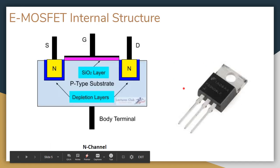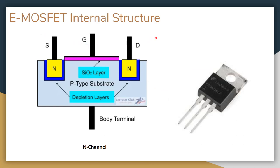Now let's look at how an E-MOSFET works and its internal structure. You can see in this figure that there are three terminals: source, gate, and drain. The fourth terminal is the body terminal, which is not very important because internally it is connected with the source. The main working of the MOSFET depends upon these three terminals: the source, the gate, and the drain.